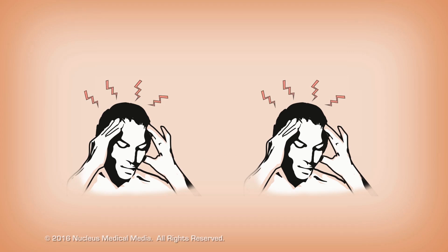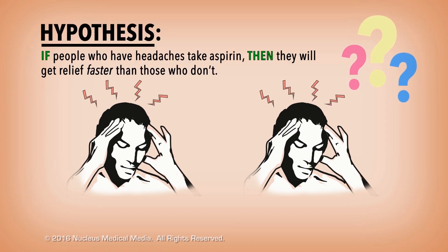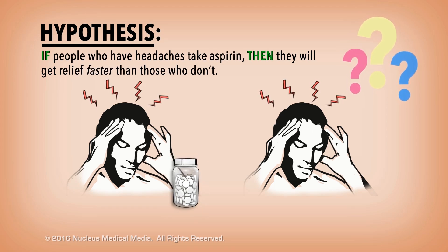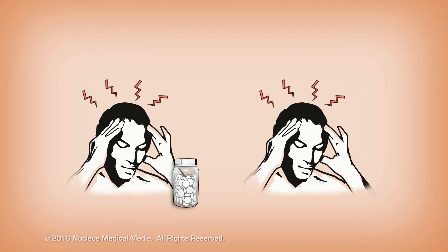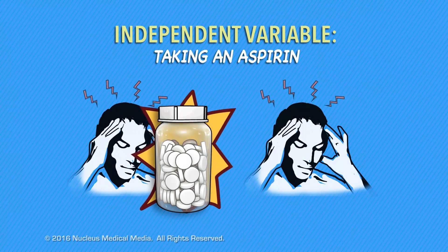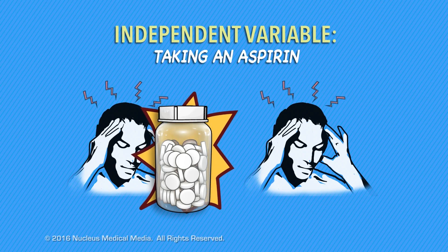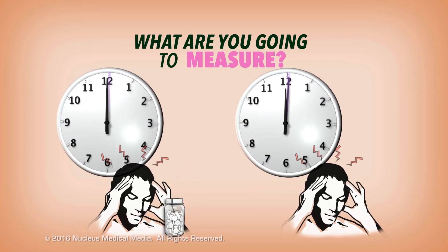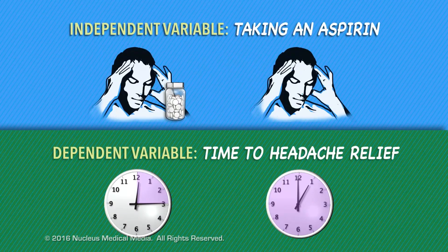Here's another example. The hypothesis is that if people who have headaches take aspirin, then they will get relief faster than those who don't take aspirin for headaches. What's the thing that's different? The independent variable is whether or not somebody is taking an aspirin. What are you going to measure? You're measuring how long it takes for their headache to go away — that's the dependent variable.